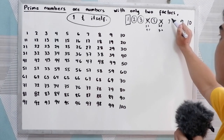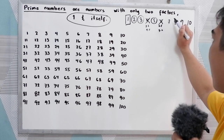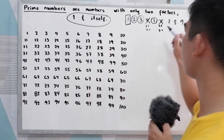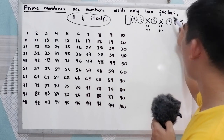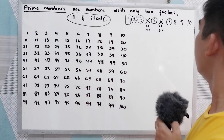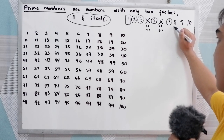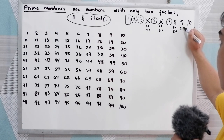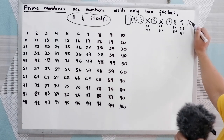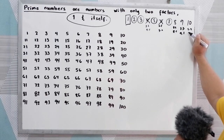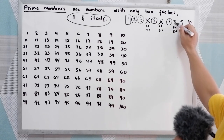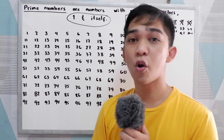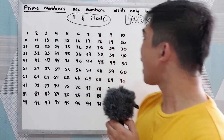And seven? Seven has the factors of one times seven, so we have two factors only. Seven is a prime number. Eight has factors: four times two and eight times one. Nine has three times three and nine times one. Ten has five times two and ten times one. So eight, nine, and ten are not prime numbers — they are composite numbers.